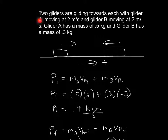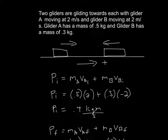In this problem, we have two gliders gliding towards each other, with glider A moving at 2 meters per second and glider B moving at 2 meters per second. Glider A has a mass of 0.5 kilograms, and glider B has a mass of 0.3 kilograms.